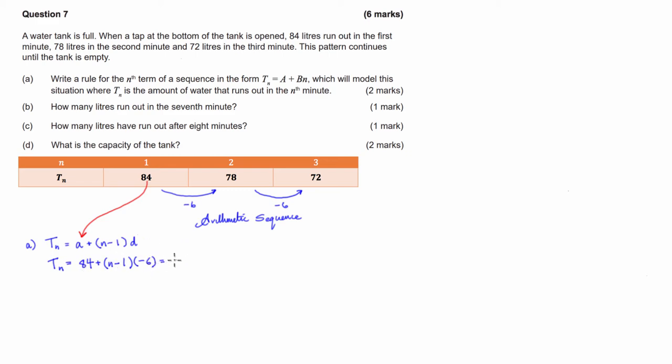Now from here, I'm going to multiply into that bracket, so I'm going to be left with my 84, plus, well it's actually not going to be plus, it's going to be negative 6 times n is negative 6n, negative 6 times negative 1 is positive 6. So from here, I can just combine my like terms, and I'm left with t_n equals, 84 plus 6 is 90, minus 6n. So that's part A done.